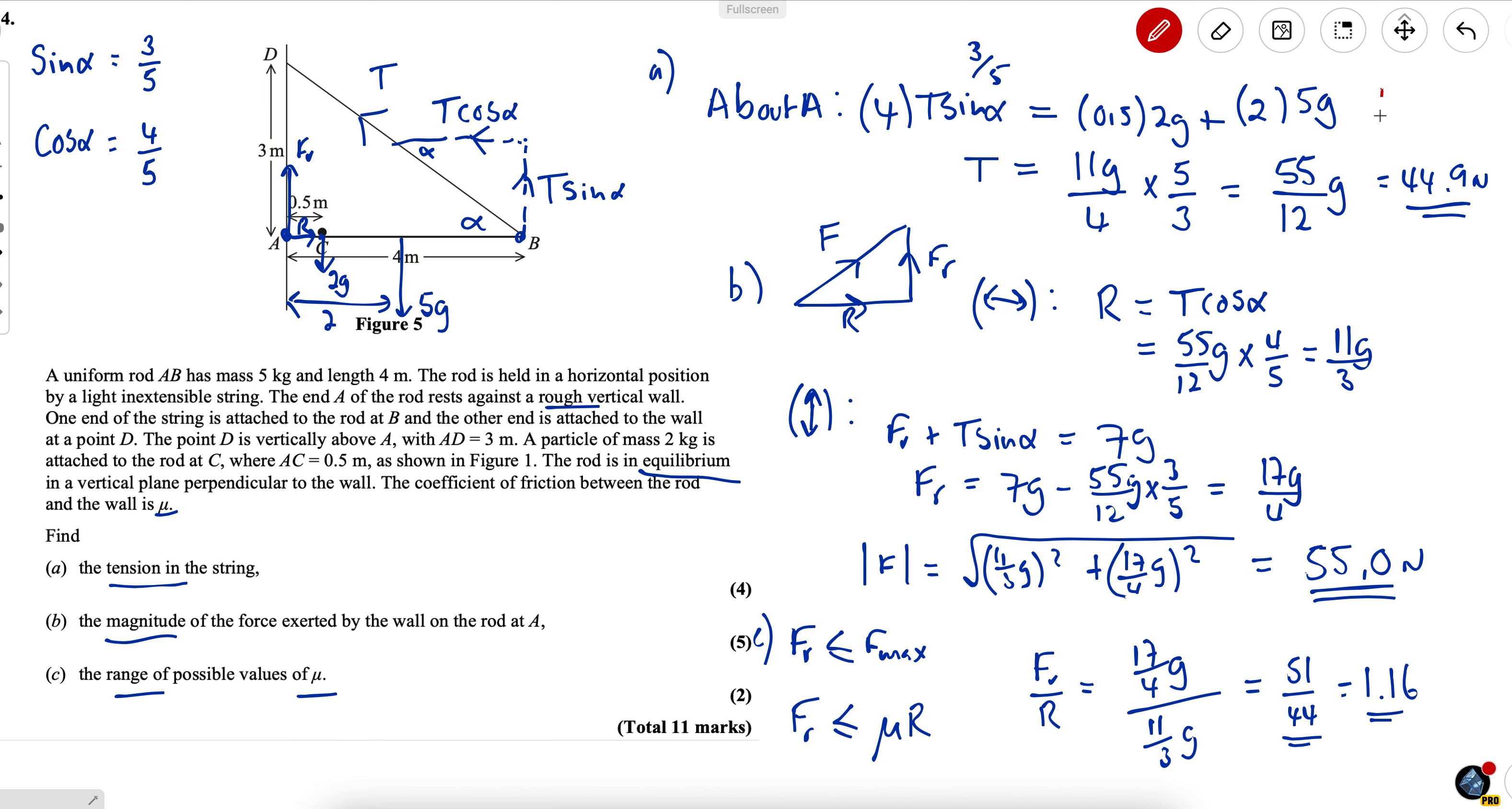So either this value or this value marks wise. First of all there's a method mark for this usual criteria all terms included no additional terms added dimensionally correct with force and distance for each term. Then there are two accuracy marks. Deduct one for each mistake. If the G's are missed out you actually lose both of those marks because that shows a lack of understanding.